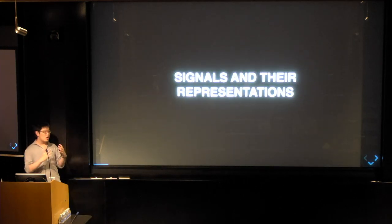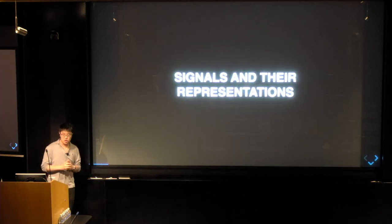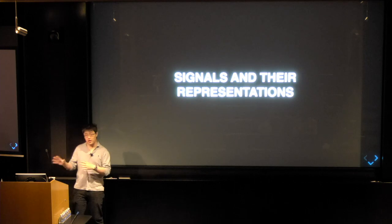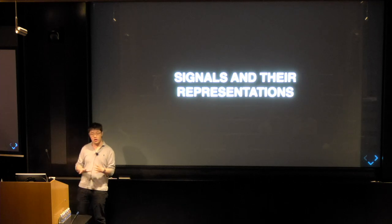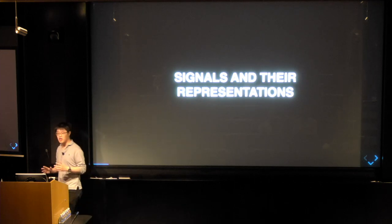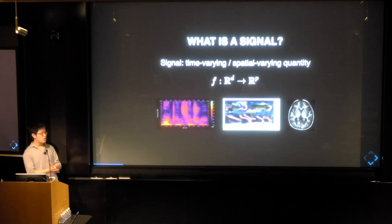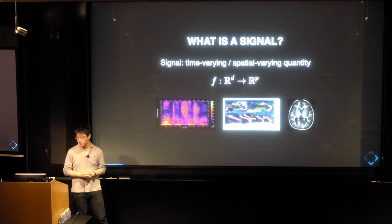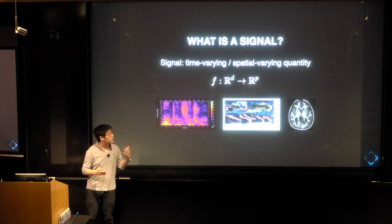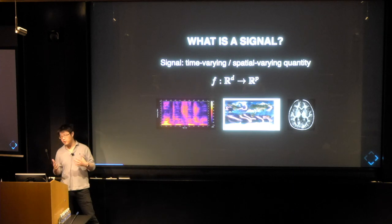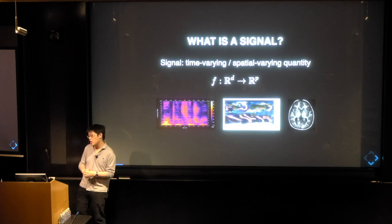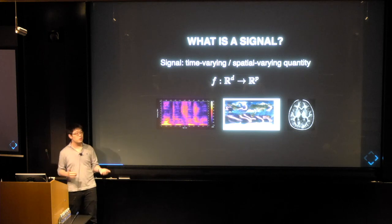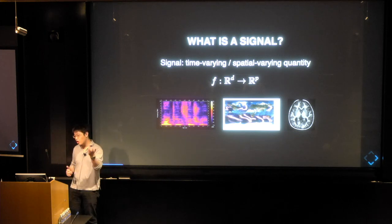To start with, I'm going to discuss a little bit of vocabulary. I think this will be obvious for most people here, but I just want to make sure that when I say something, everyone agrees on what it means. There's this word 'signal representation.' So what is a signal? A signal, I would think of it as some quantity that is varying in time and space. Roughly, you can think of it as a function from R^d to R^p.